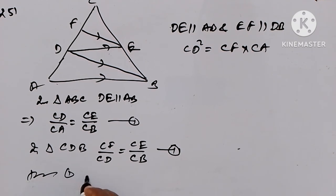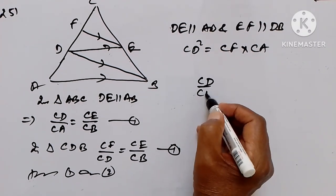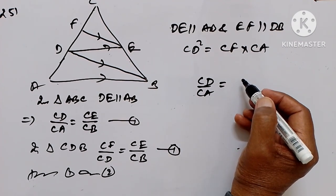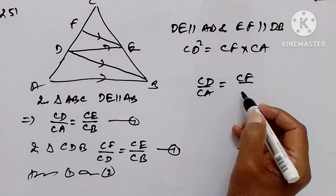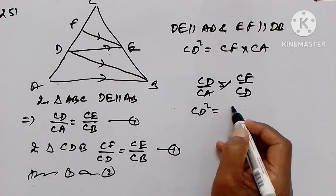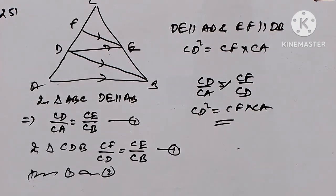Now from equations 1 and 2, we see that CD upon CA equals CF upon CD. Cross multiplying, we get CD² = CF × CA. Hence proved. So this is about Section B. In the next video we will take up Section D. Thank you.